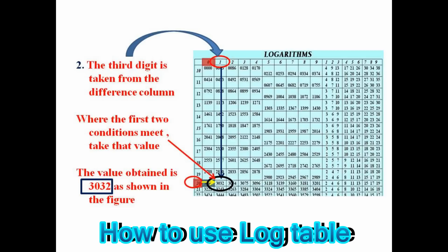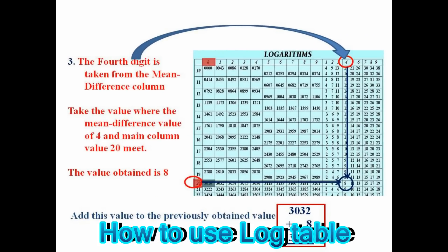As you can see in the figure, the third digit is taken from the difference column during the calculation of log 20.14. Where the first two conditions meet, pick out that value. The value obtained is 3032. The fourth digit is taken from the mean difference column, where the mean difference value of 4 and mean column value 20 meet, and the value obtained is 8, as shown in the figure.